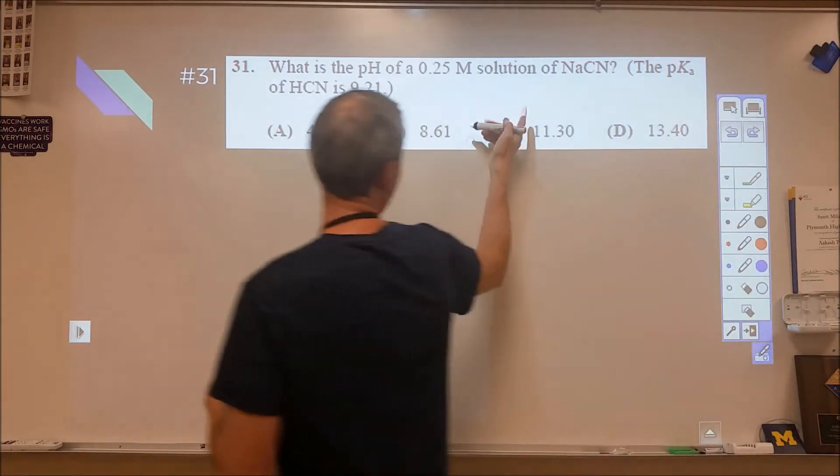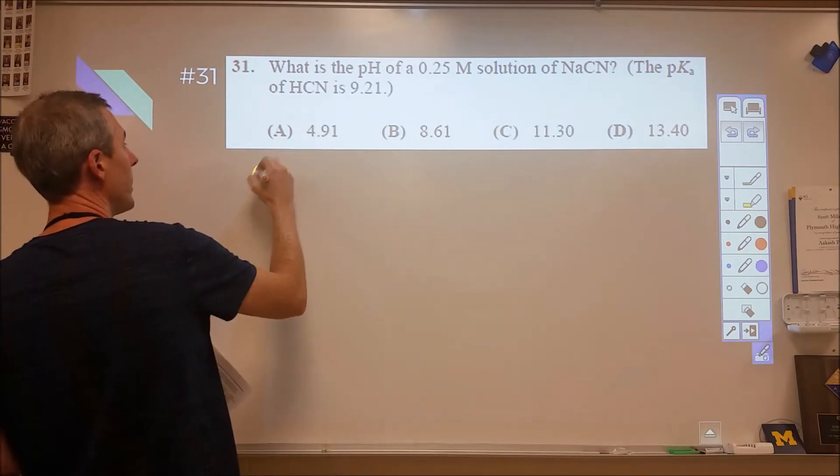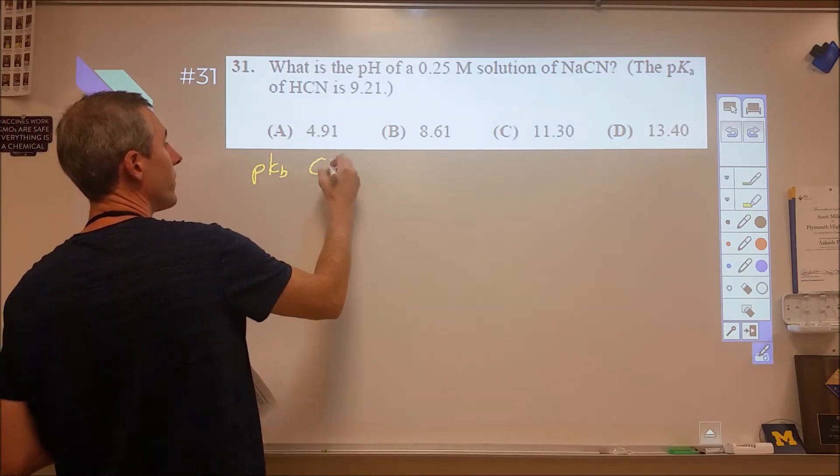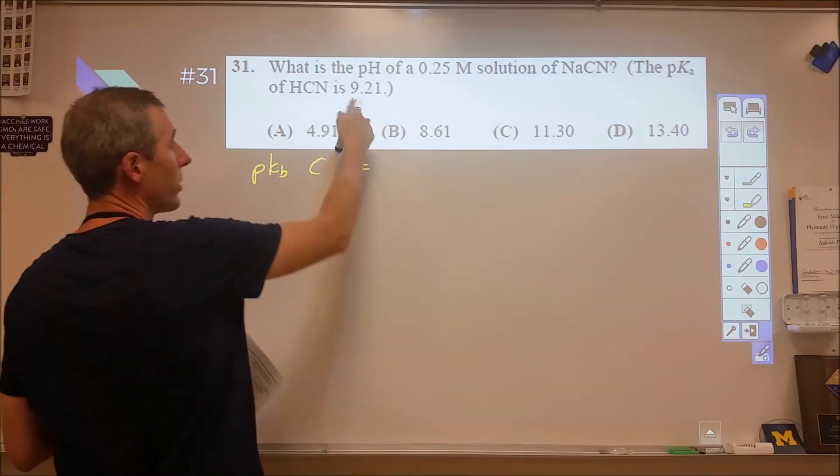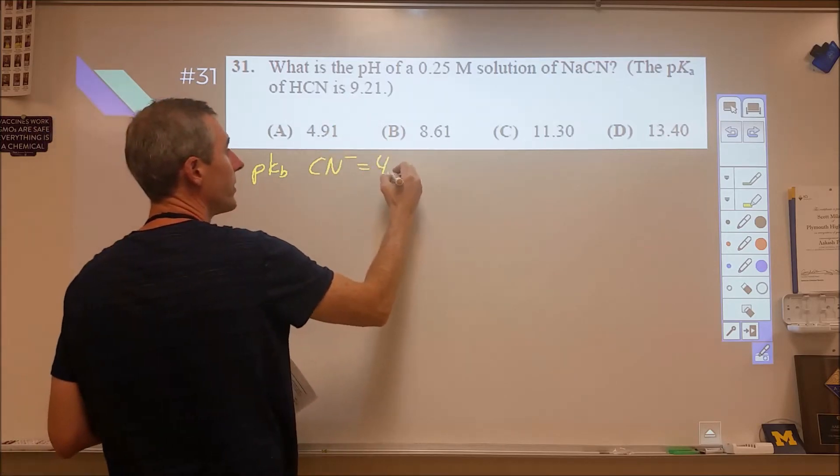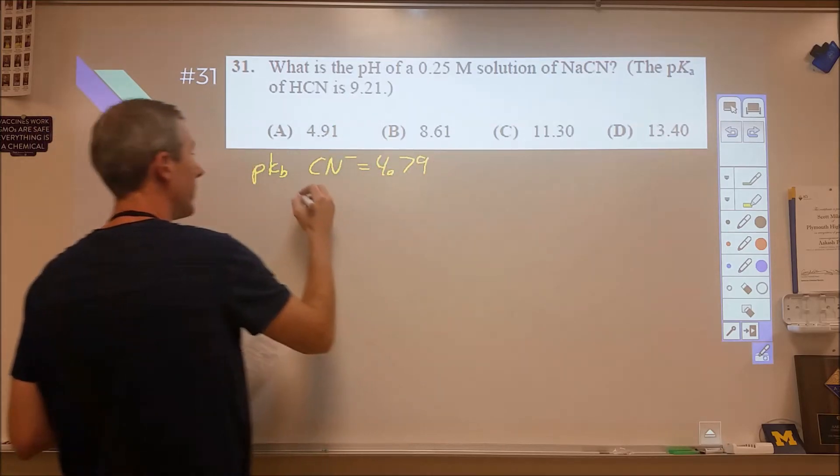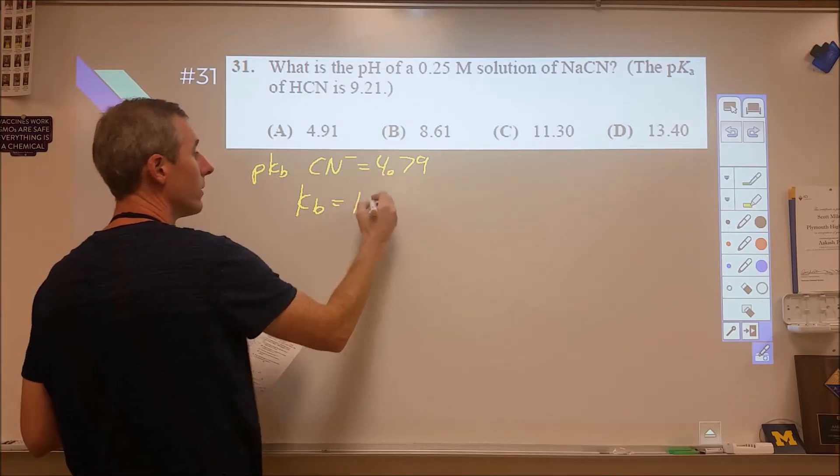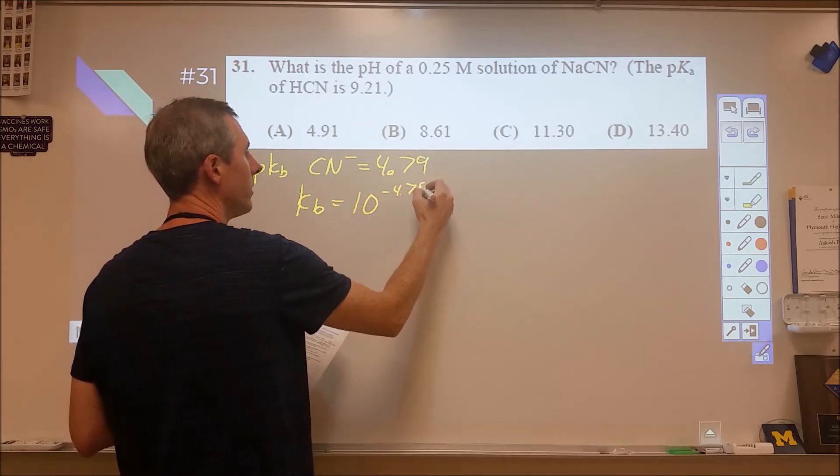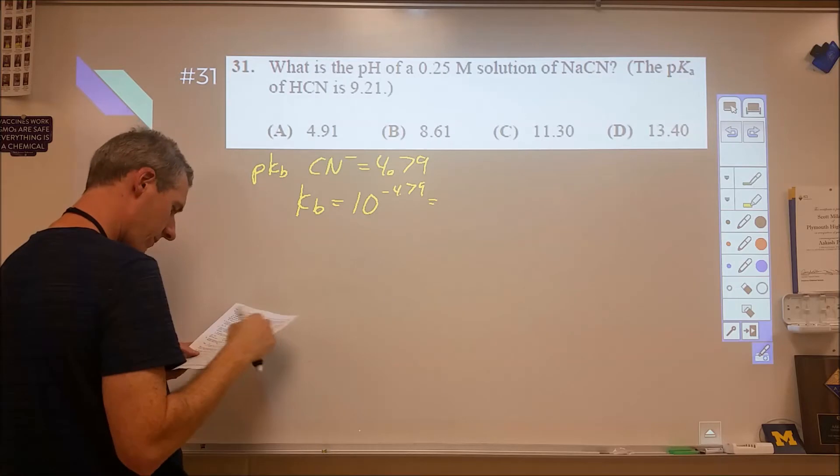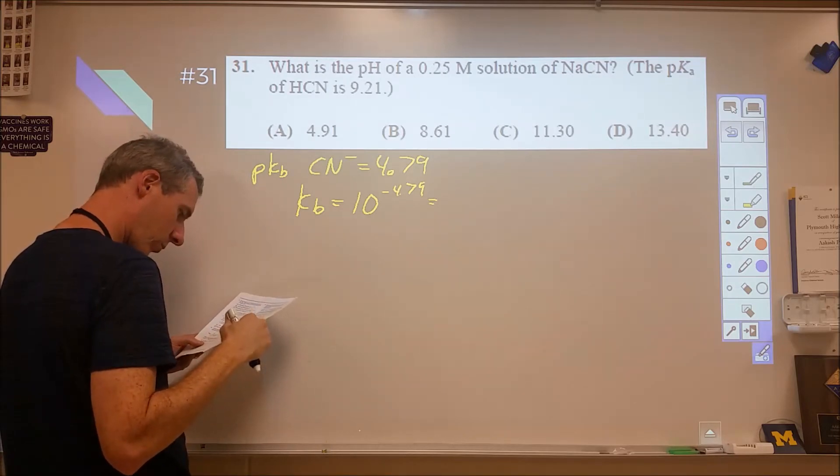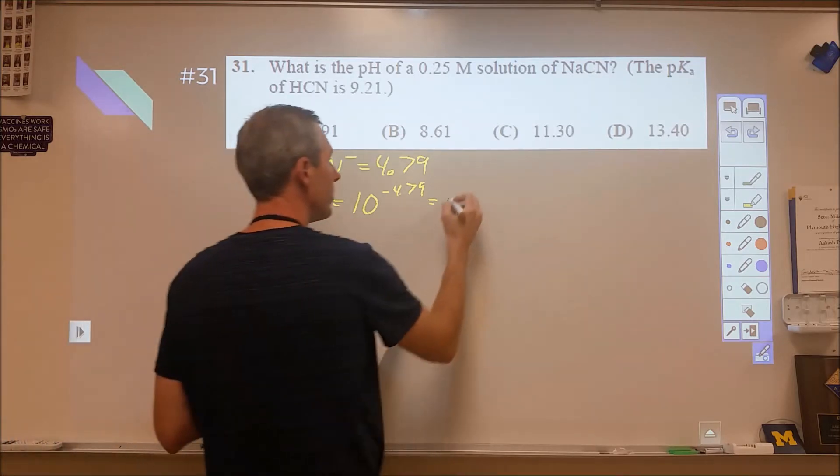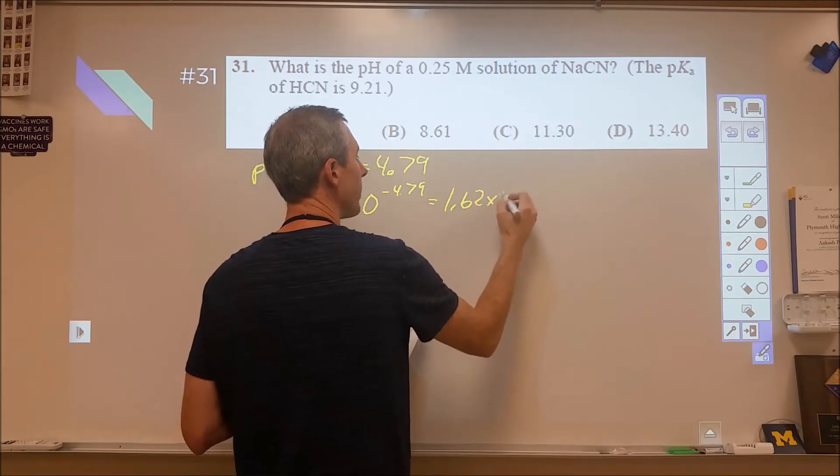What we're going to do here first is I took the pKa and made it into a pKb for the conjugate, the cyanide, and I subtracted that from 14, so that's going to be 4.79. Then I found the Kb from that by doing 10 to the negative 4.79, and that Kb came out to be 1.62 times 10 to the negative 5th.